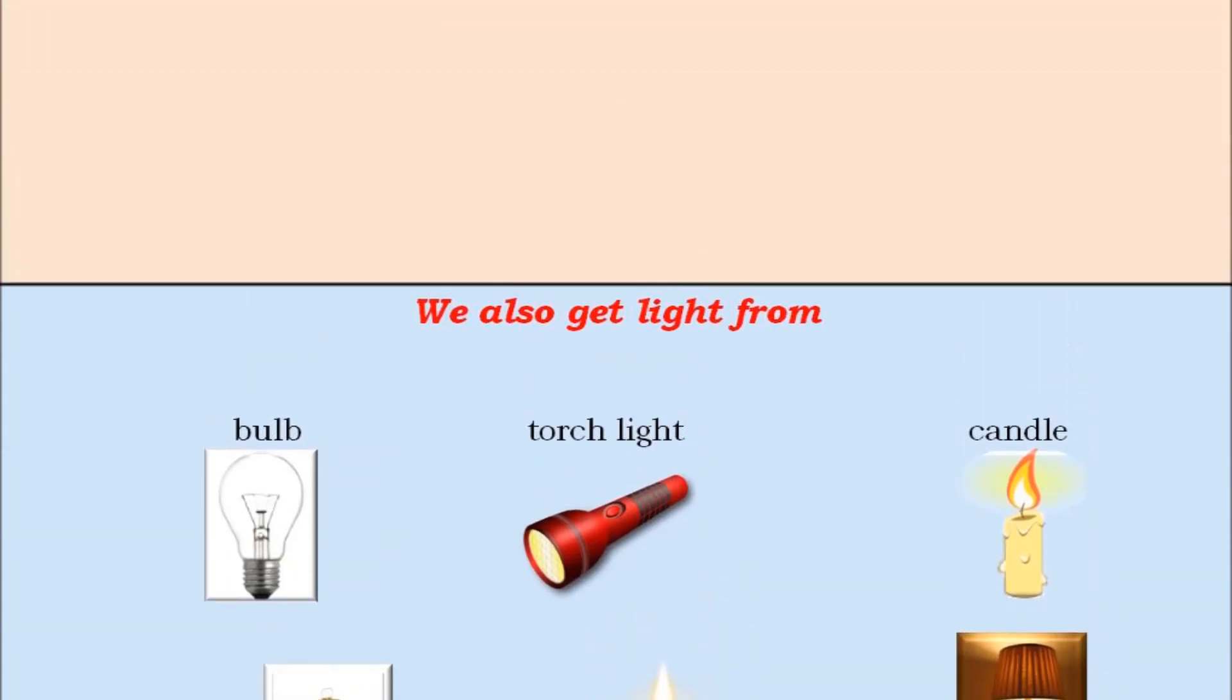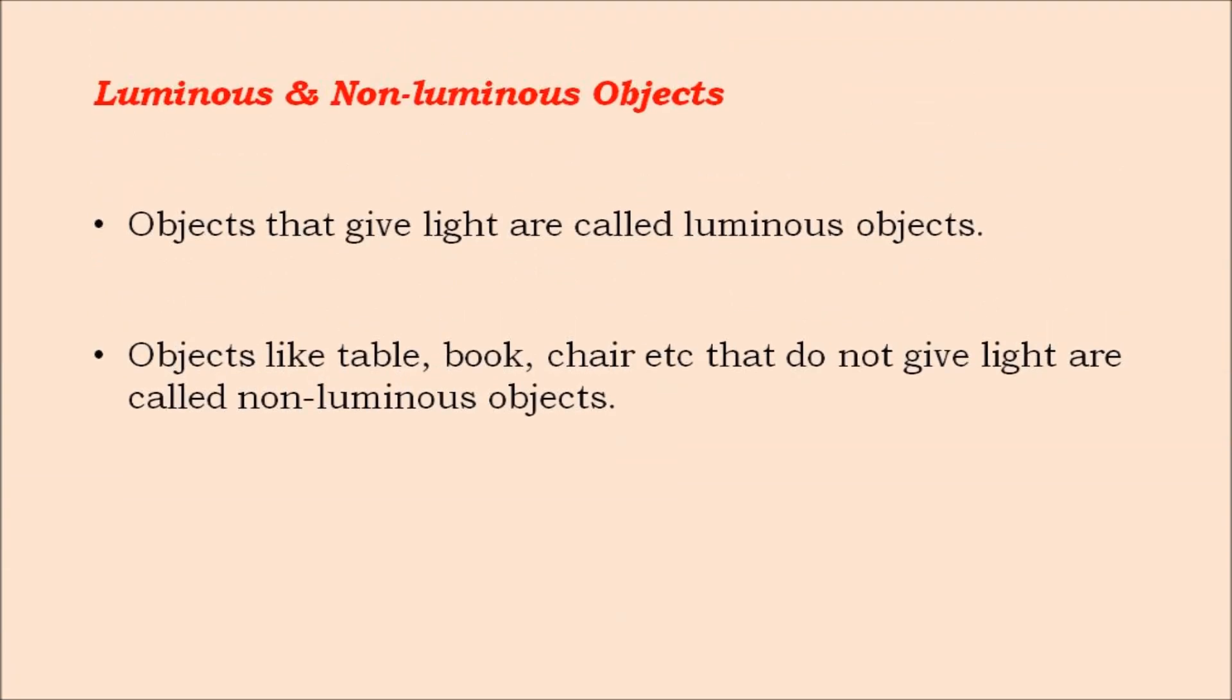The objects like sun, bulb, candle etc. that give light are called luminous objects, while the objects like table, book, chair etc. that do not give light are called non-luminous objects.